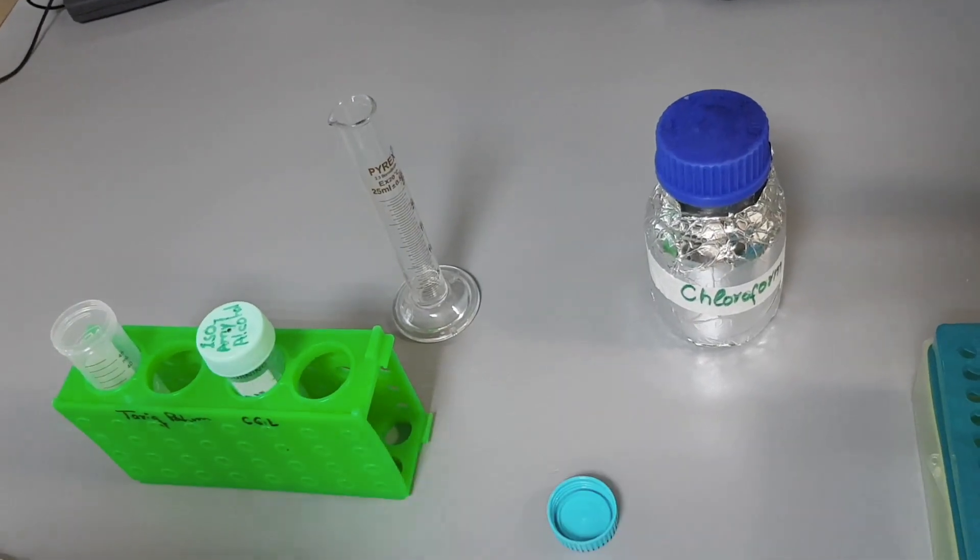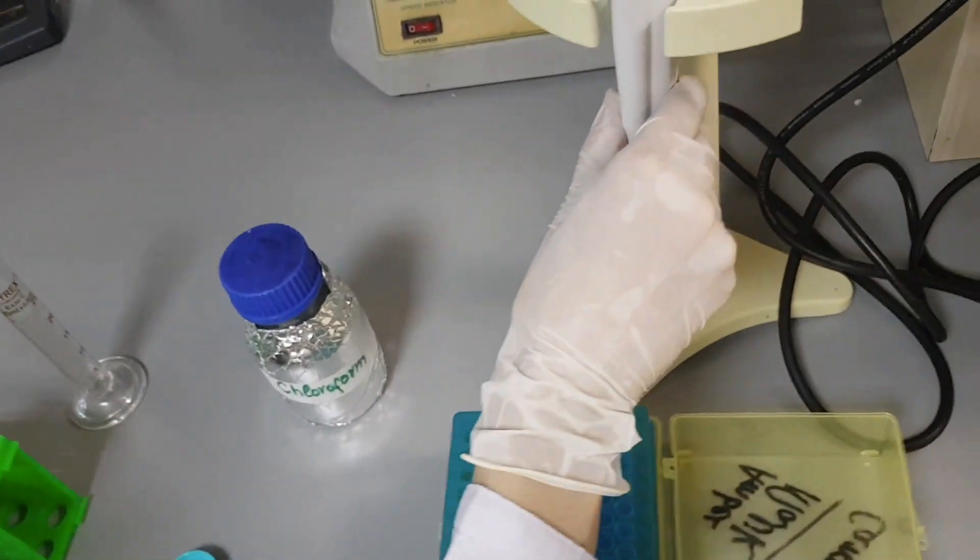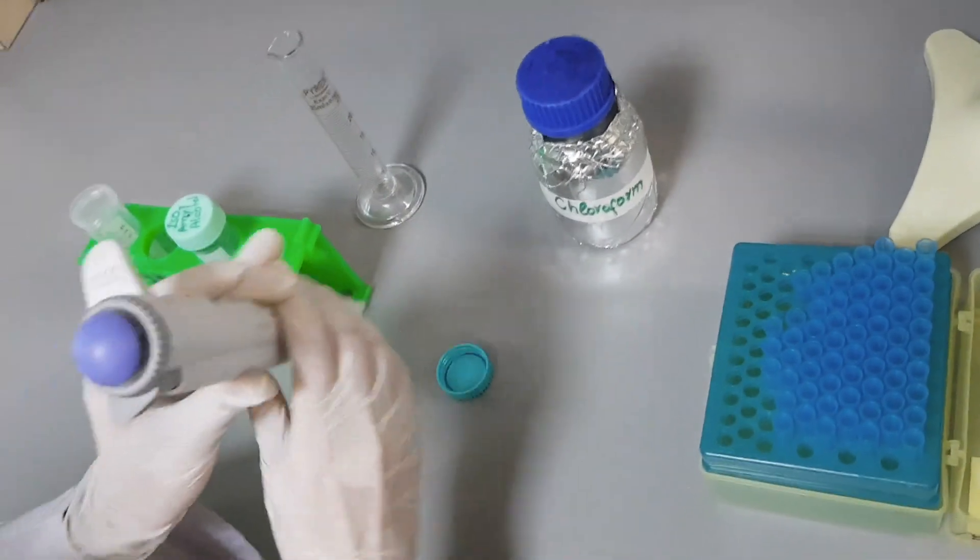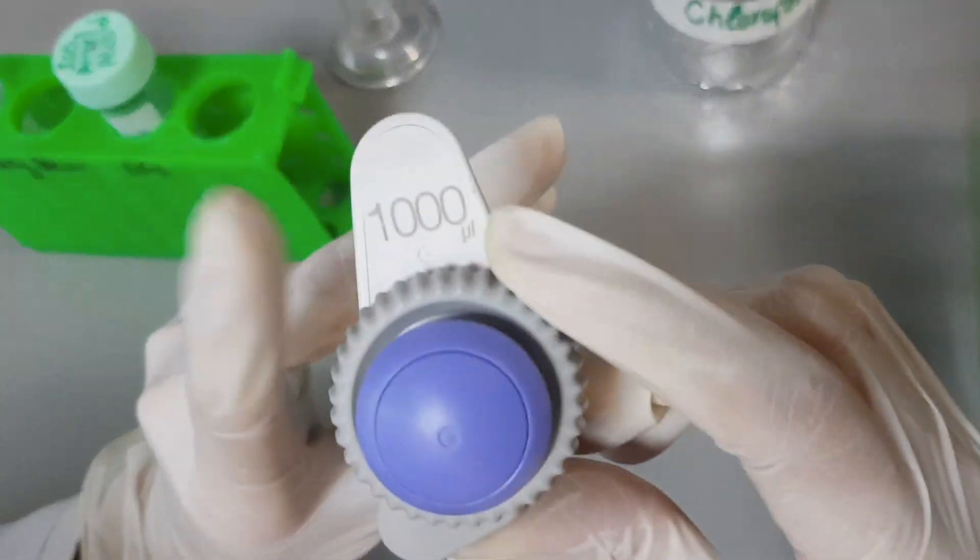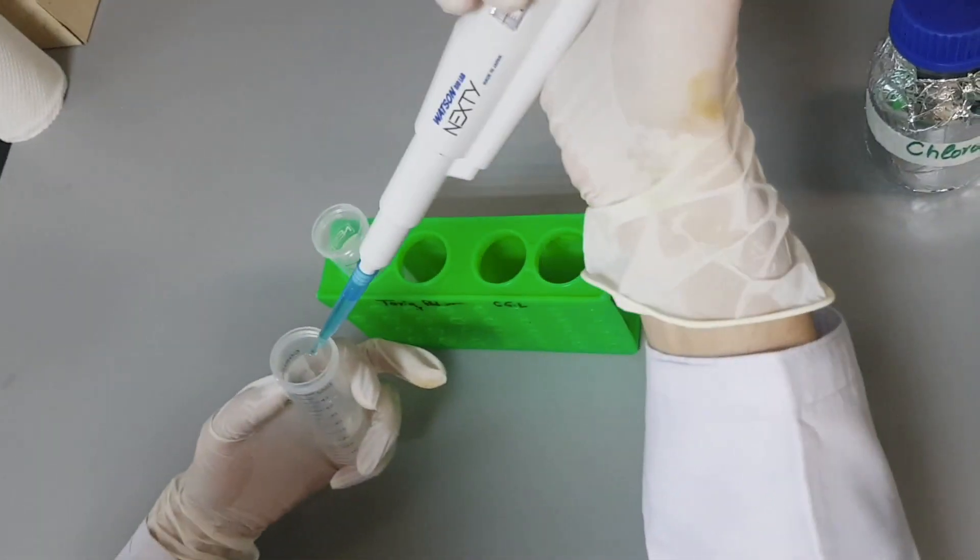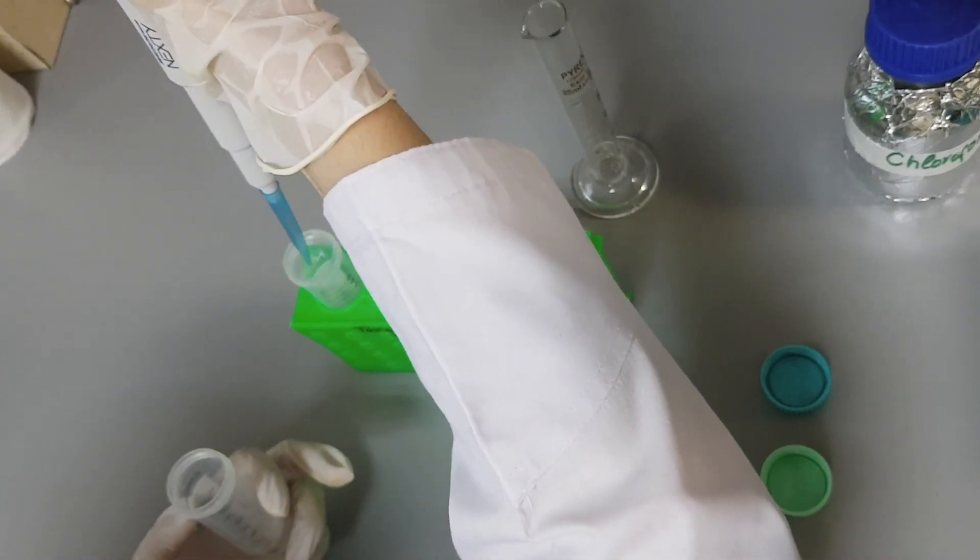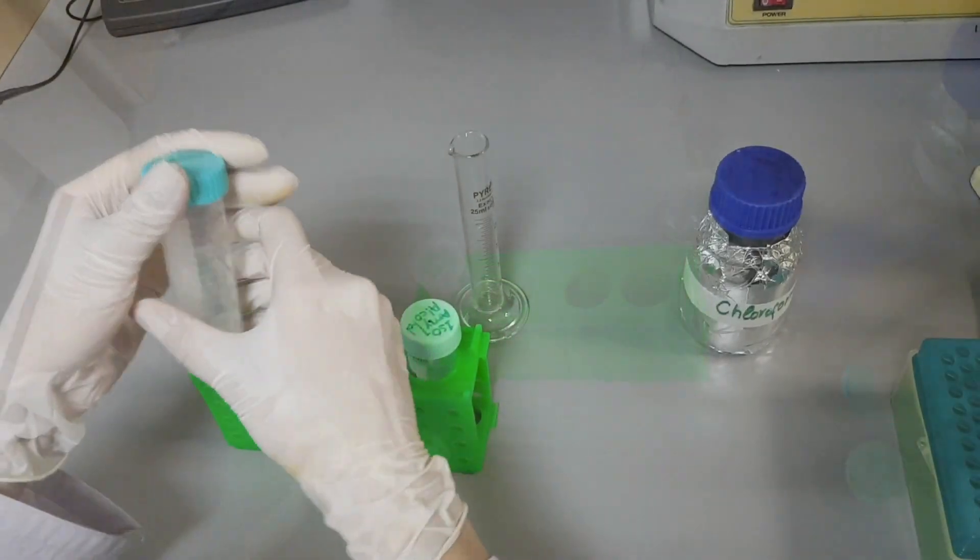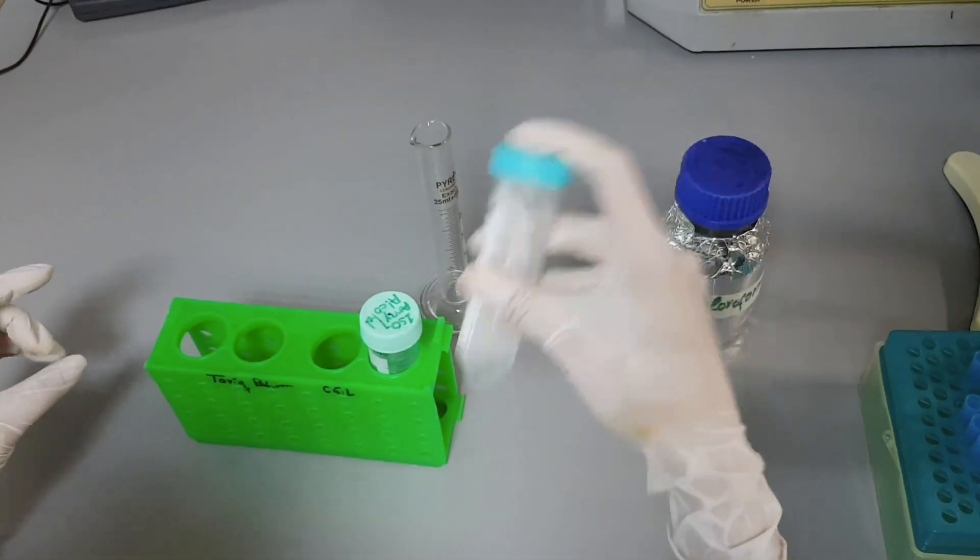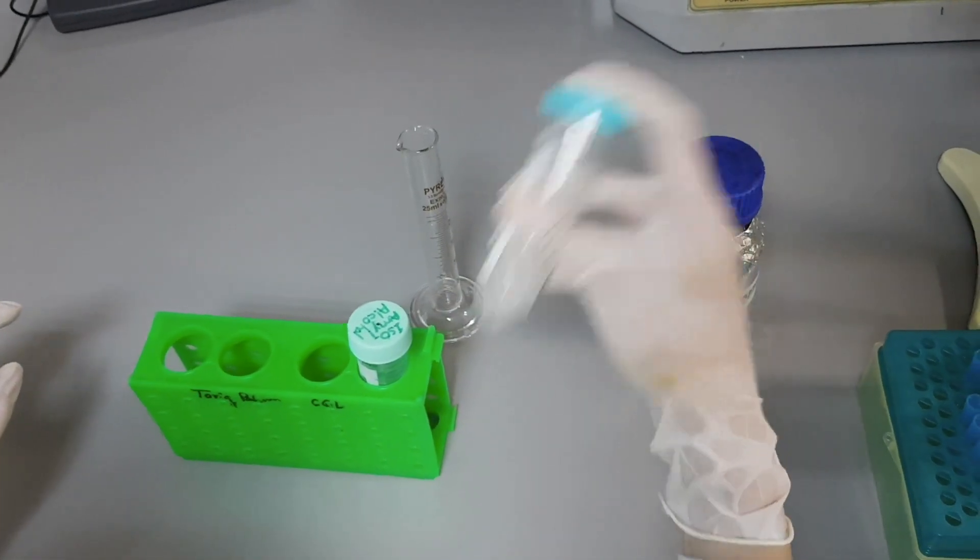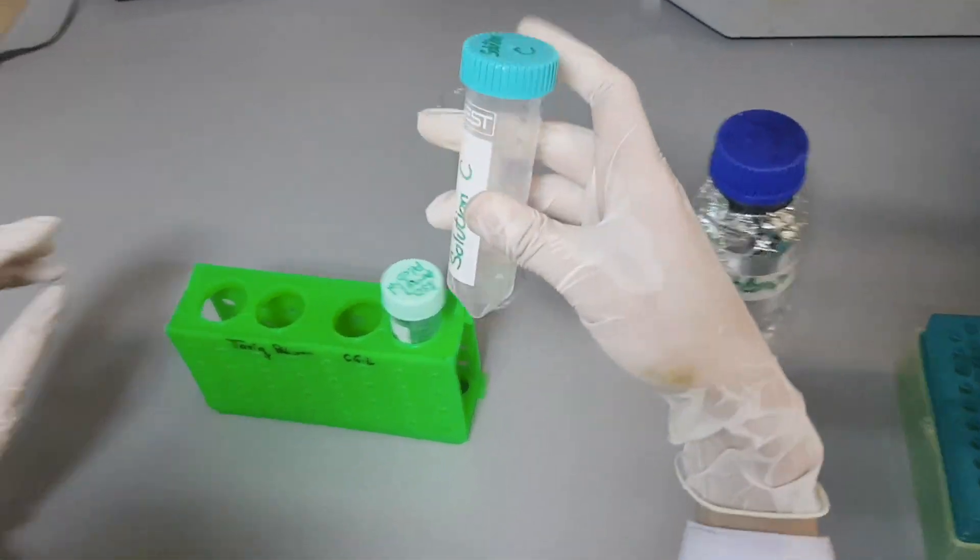Now take 1 ml of isoamyl alcohol by using a 1000 microliter pipet and pour it into the chloroform containing falcon tube and mix it well. Now solution C, which looks transparent, is ready to use.